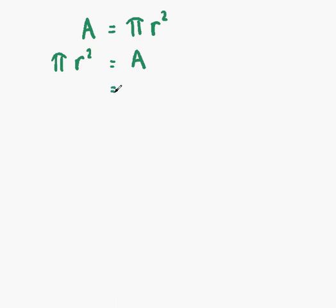The next best thing to do is try and get r on its own without the pi sign beside it. We have pi r squared on the left and A on the right, and we're going to try and move the pi. Pi is sitting beside r squared, which means pi times r squared. If pi goes onto the other side, it changes to divide. So A is being divided by pi, giving us r squared equals A over pi.